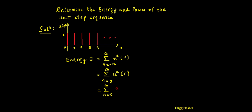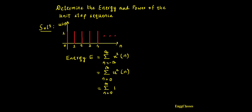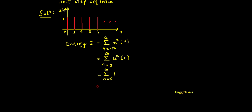The amplitude of u(n) is 1, and 1 squared is still 1. So I need to add 1 infinite times — that is 1 plus 1 plus 1, infinitely. The answer turns out to be infinity. So energy E turns out to be infinity.